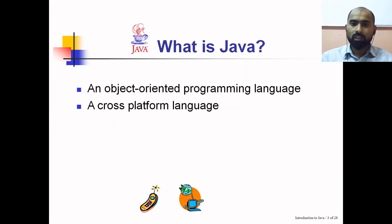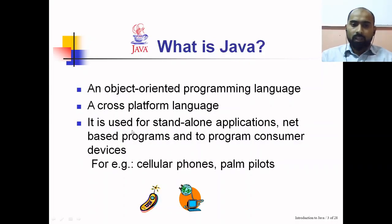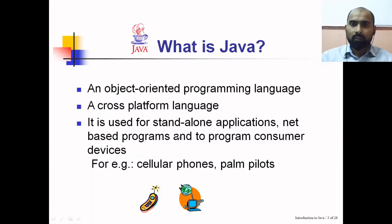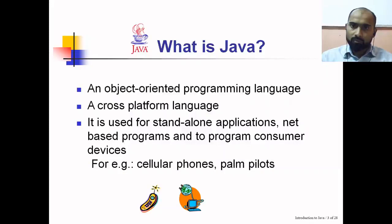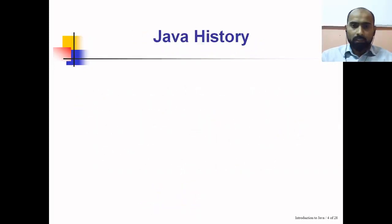Programs written in Java, however, are platform independent. Java is used for standalone applications, internet-based programs, and to program consumer devices. It can be used to develop standalone applications for desktop systems, network-based internet applications, and also for consumer electronic devices such as cellular phones, PDAs, microwave ovens, and mobiles.